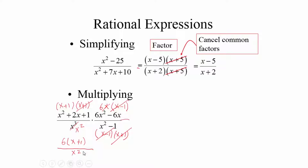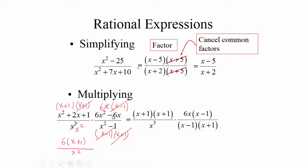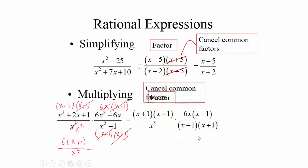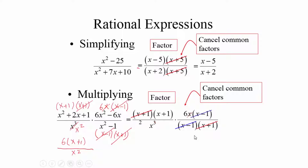Looking at the slide, they factored x squared plus 2x plus 1 as x plus 1 times x plus 1, factored out 6x from the second expression, used the difference of two squares, and canceled common factors. The final result is 6 times x plus 1 divided by x squared — which is the same answer we got.